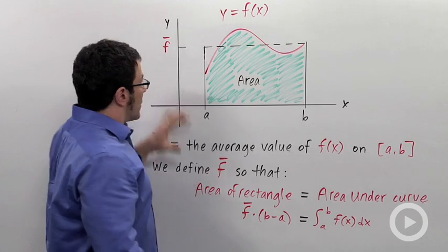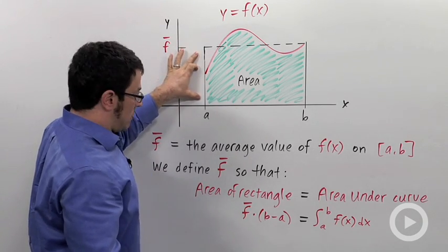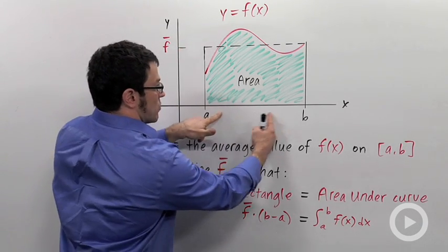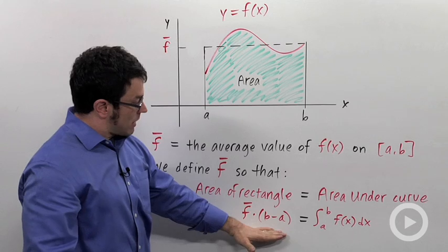The area of the rectangle is whatever height this is, f bar, times b minus a, this width. That's the rectangle.